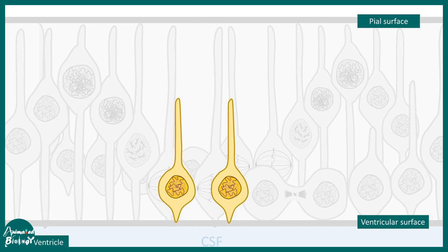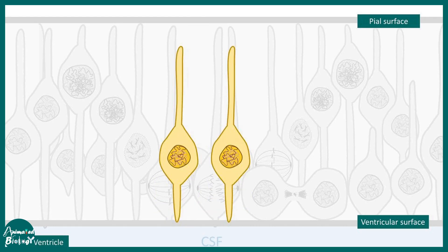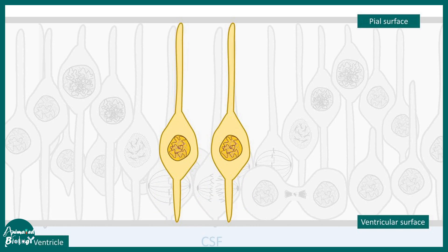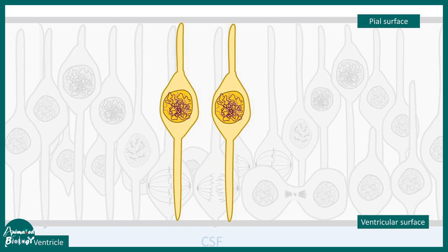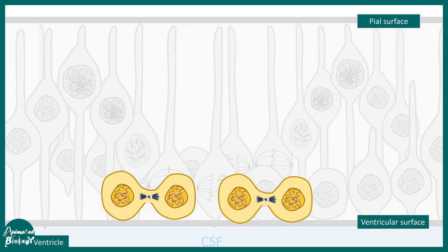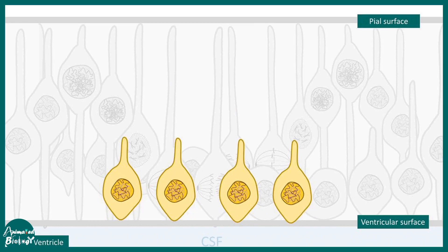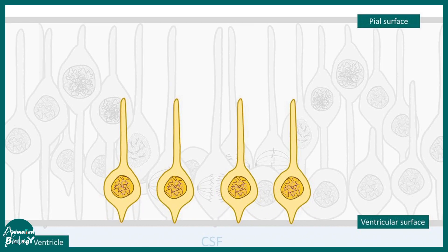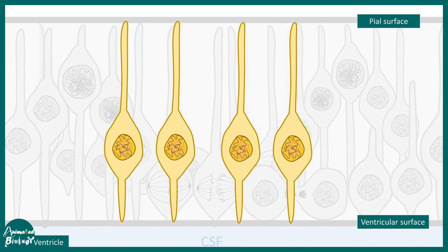They divide into two radial glia. Eventually, these two radial glia are each able to divide and give rise to more radial glia. This is how the radial glia are moving up and down during the process of neurulation.